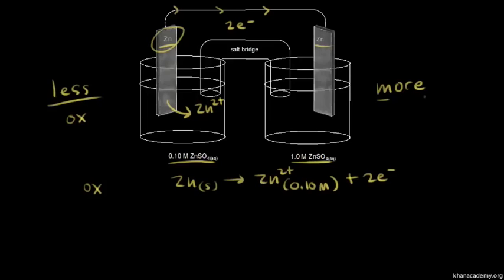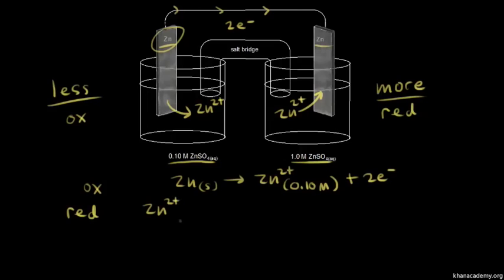Now let's think about the more concentrated side. The more concentrated side needs to decrease its concentration of Zn²⁺ ions in solution. It can do that if Zn²⁺ ions come out of solution — if they gain electrons to form solid zinc. So that's a reduction. Reduction occurs on the more concentrated side. So the reduction half-reaction is: Zn²⁺ at 1.0 molar, gaining two electrons to form solid zinc.